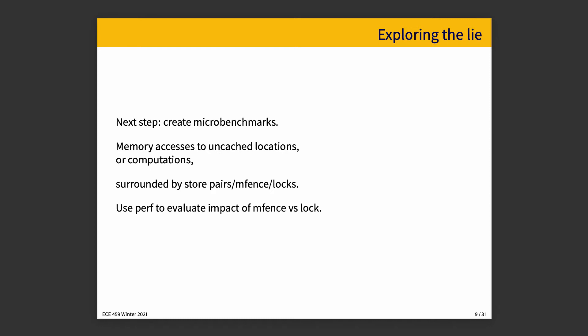So to solve the mystery, if you will, we have to dig down a little bit and find out why is it this way? What can we observe? What can we learn? And to that, you create microbenchmarks. Microbenchmarks contain memory accesses to uncached locations or computations surrounded by store pairs or MFence or locks to make a determination about which one of these is actually faster. You use perf to evaluate the impact of MFence and compare it to using locks.